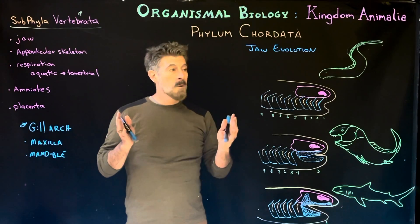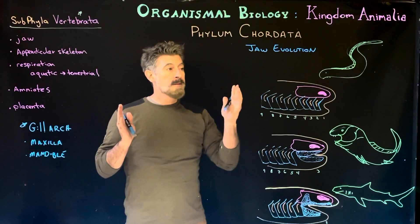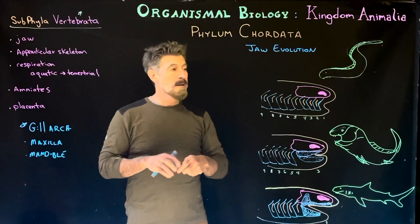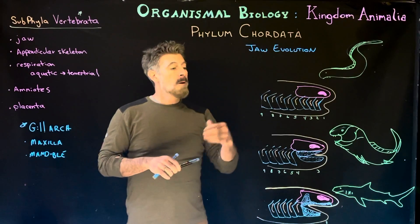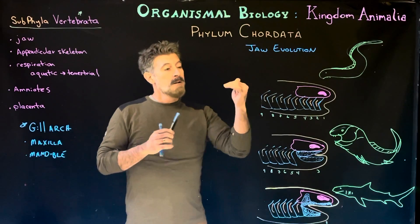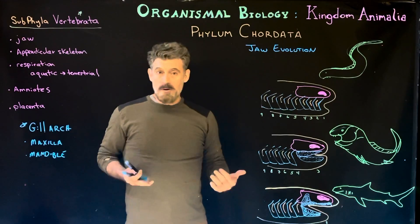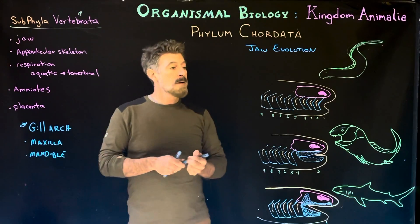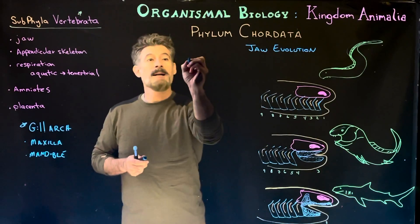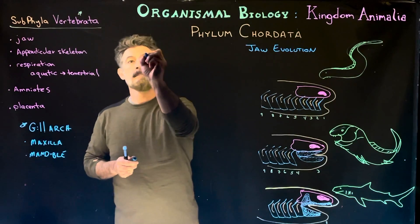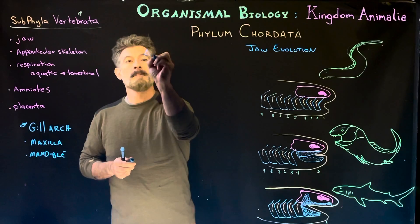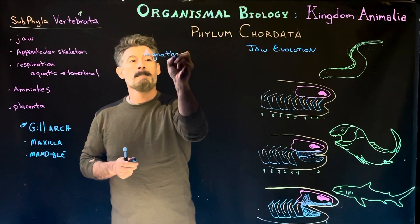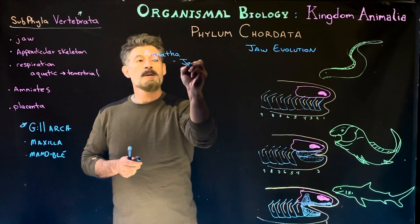Next we're going to look at the agnaths primarily, but we're going to be talking about the evolution of a jaw. And that all begins with this group, the agnatha, or the jawless fish.